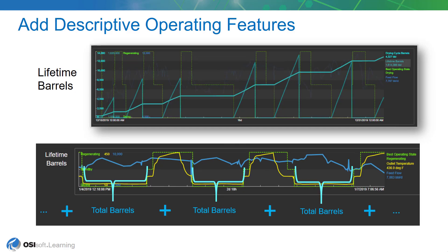The other descriptive feature we'll calculate is the lifetime barrels. This will be an ever-increasing accumulation of the barrels that went through the dryer for its entire lifetime, accumulating over several years, so we'll always have an indication of the total barrels at any given point in time that went through the dryer.